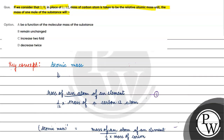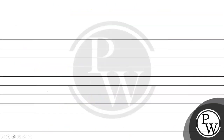If we call the original expression 1 and the new expression 2, and we divide 1 by 2, we get that the atomic mass changes. The new atomic mass — let's call it atomic mass dash — is some factor times the original atomic mass.